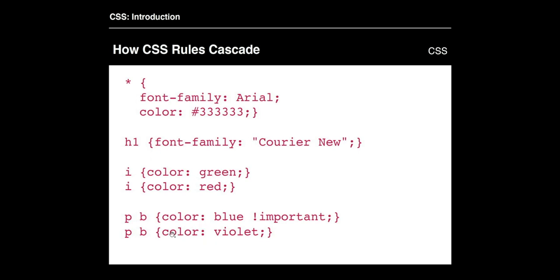If you want to override the top-down cascade, you can use the !important declaration. Here we're saying bold paragraph text should be blue, and then further down it says violet. But because we added '!important' to blue, it's going to override the violet. So if that wasn't there it would be violet, but because we said it is important, it's going to be blue.